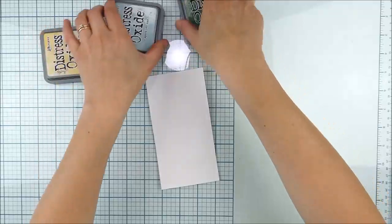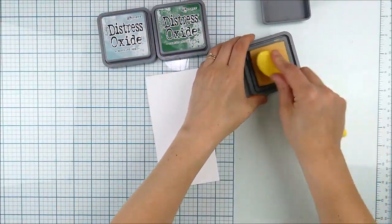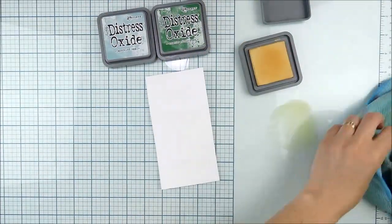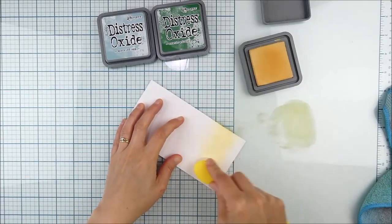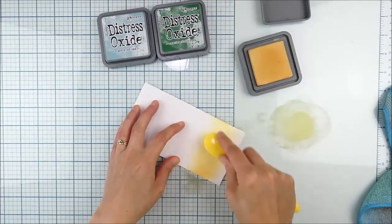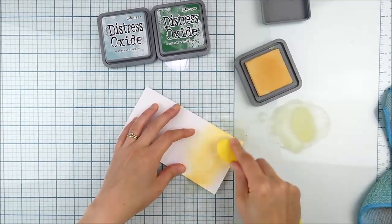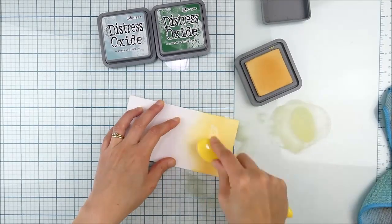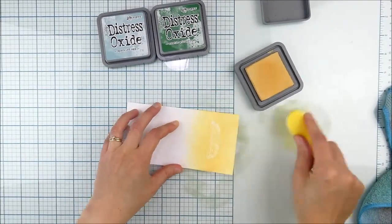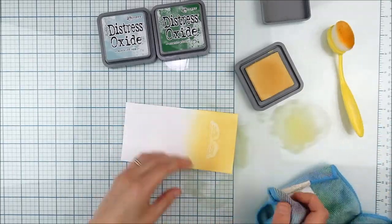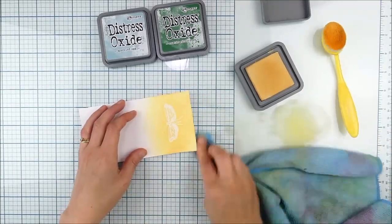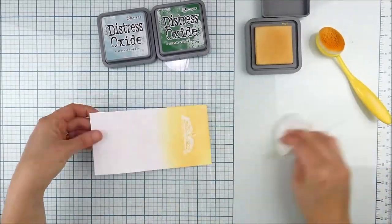I'm going to use distress oxide inks. I'm starting with scattered straw and a blending brush. I'm going to use that at the bottom. I keep a microfiber cloth handy for a couple different things - to clean my brush, clean up my workspace, and wipe off any excess ink off those images on the card base.